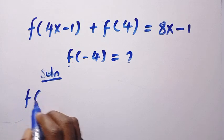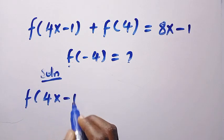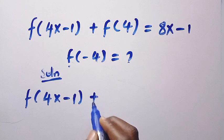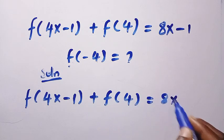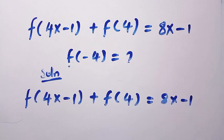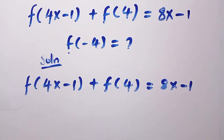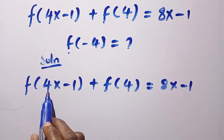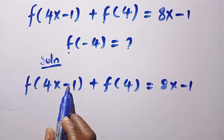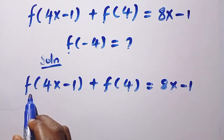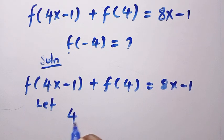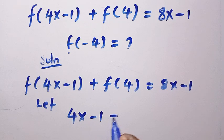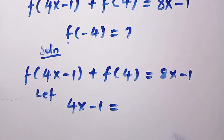From the question we have f of 4x minus 1 plus f of 4 equals 8x minus 1. We start applying the substitution method for the first method, working from the domain of the first f, which is 4x minus 1. If I let 4x minus 1 be equal to 4,